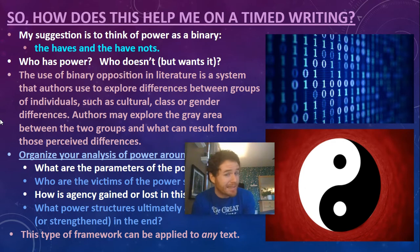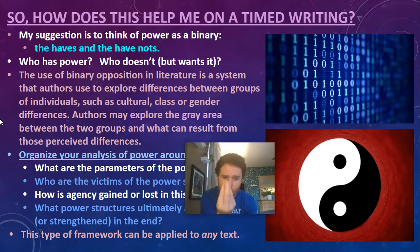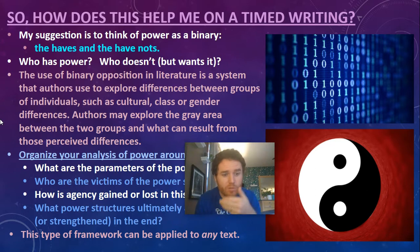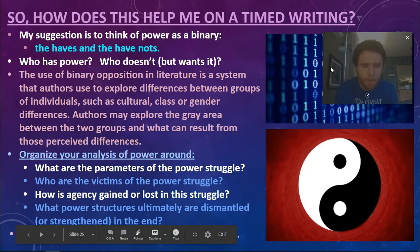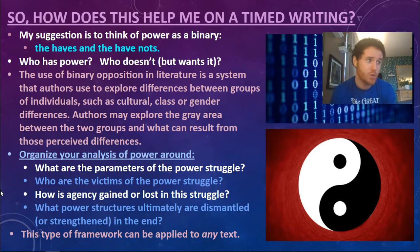The use of binary opposition in literature is a system that authors use to explore differences between groups of individuals — cultural, class, or gender differences. Authors may explore the gray area between these opposing forces and see what can result. This is another college term — binaries — that you can use in your analysis. Organize your analysis of power around: what are the parameters of the power struggle? Where are the boundaries? Who are the victims? Those that get marginalized. How is agency gained or lost in this struggle? What power structures are ultimately dismantled or strengthened in the end?